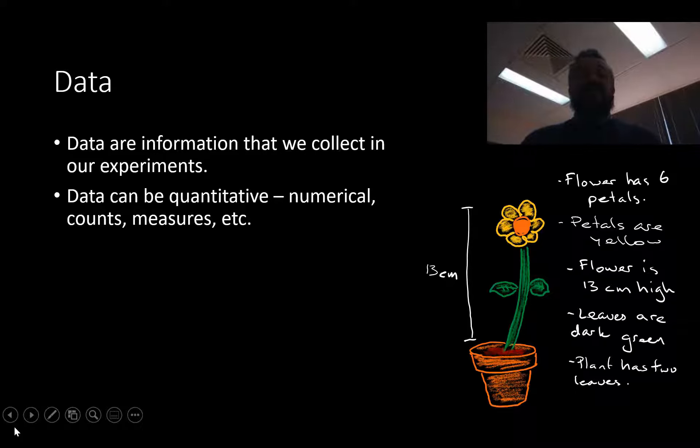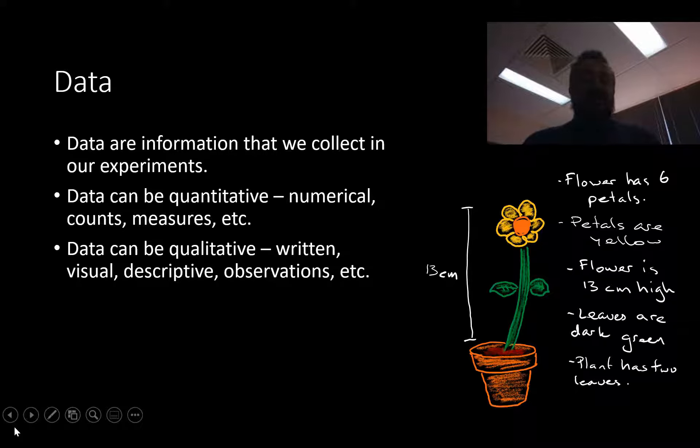Data can be quantitative, which is numerical, so counts, measures, things like that, or data can be qualitative, which are our written observations, visuals, drawings, descriptions, photos, all this sort of data which gives a description of something that's qualitative because it describes the qualities of it.